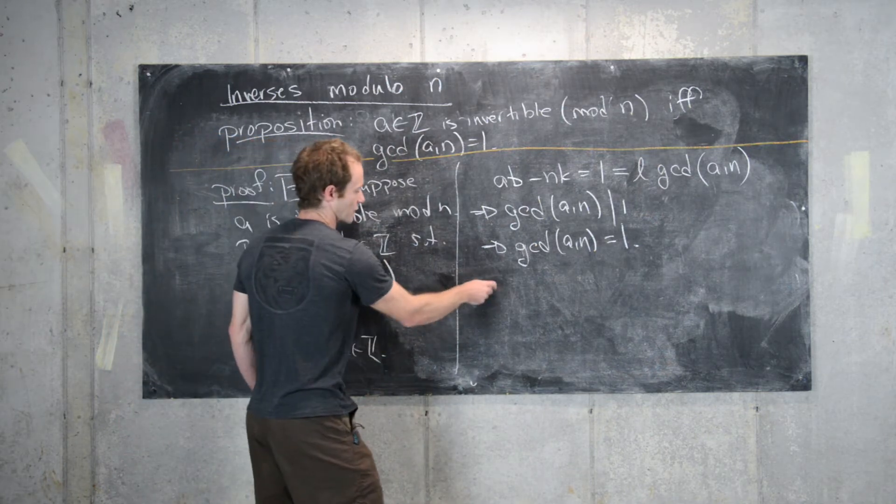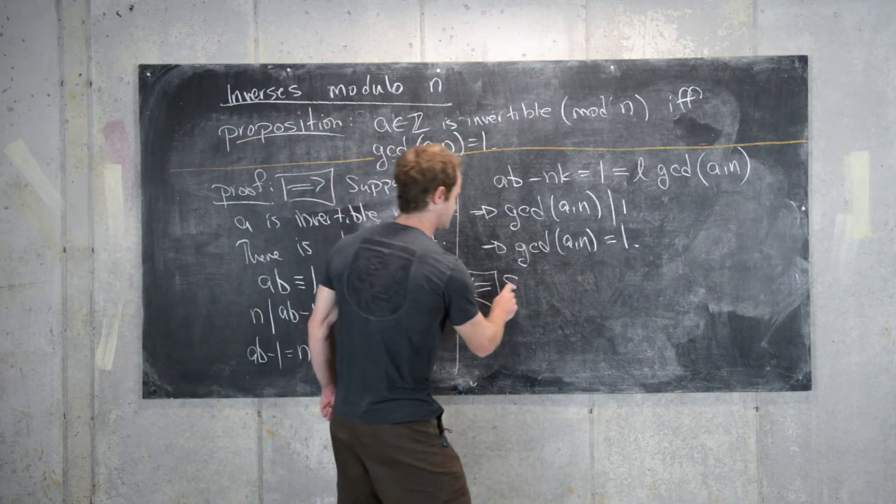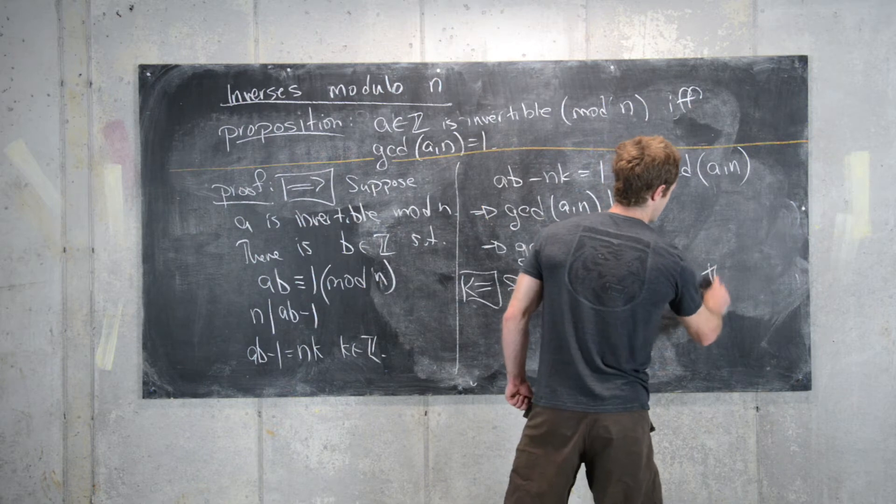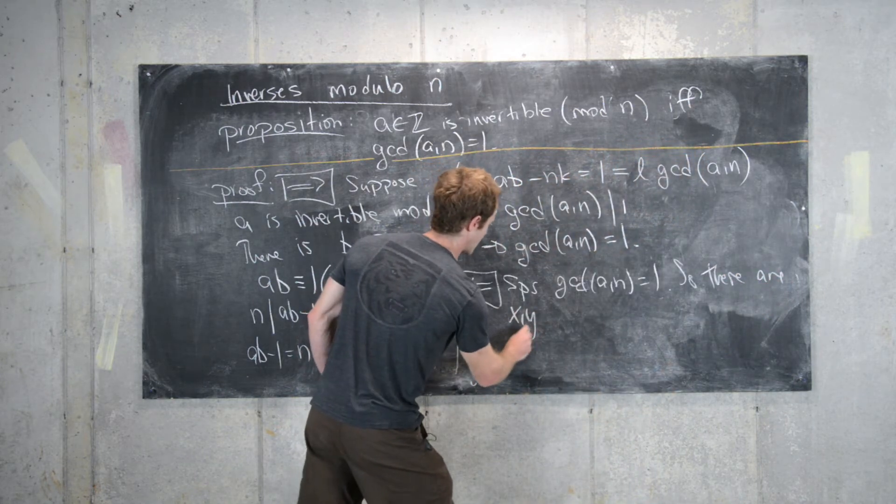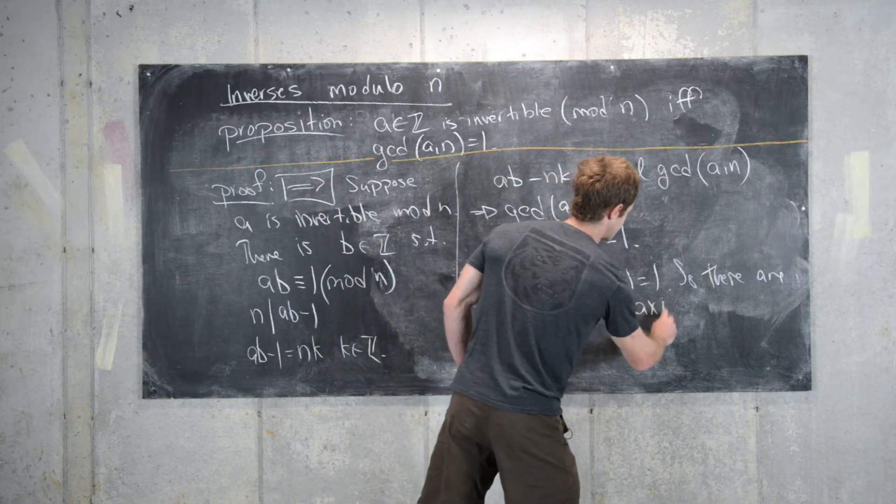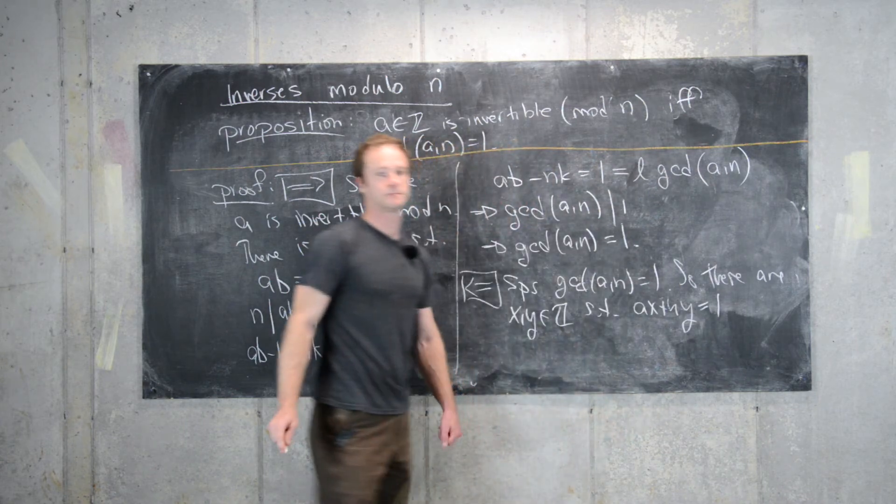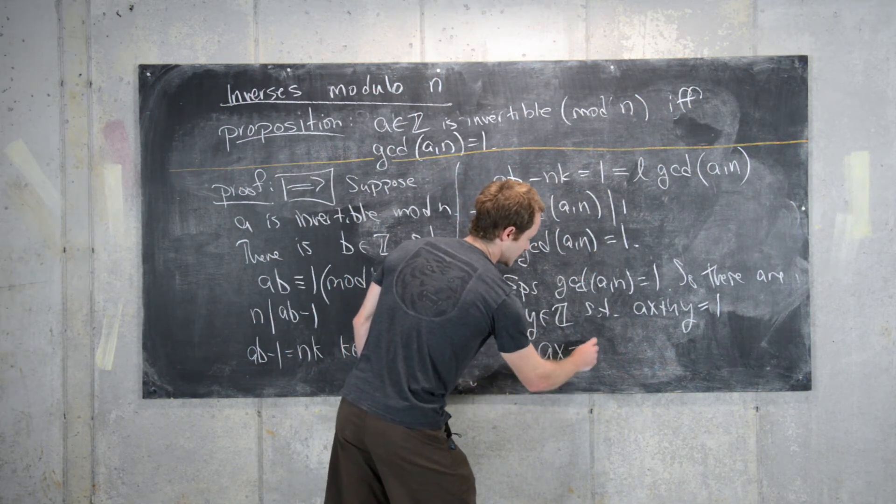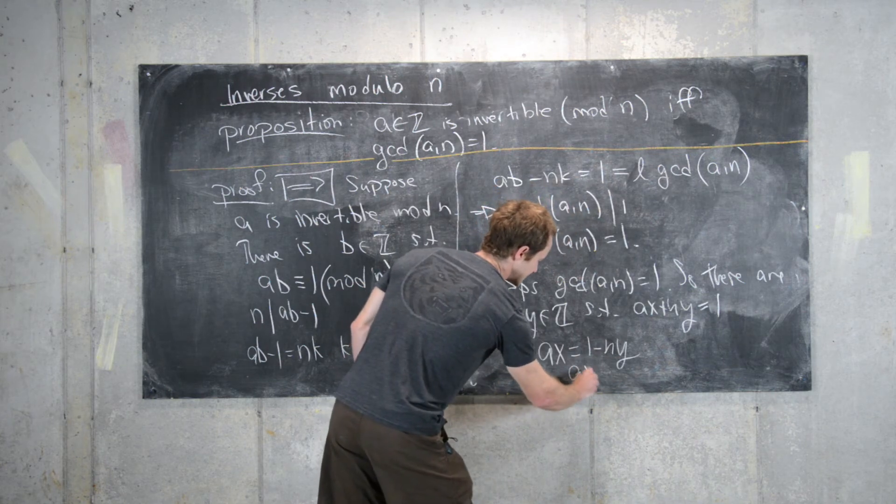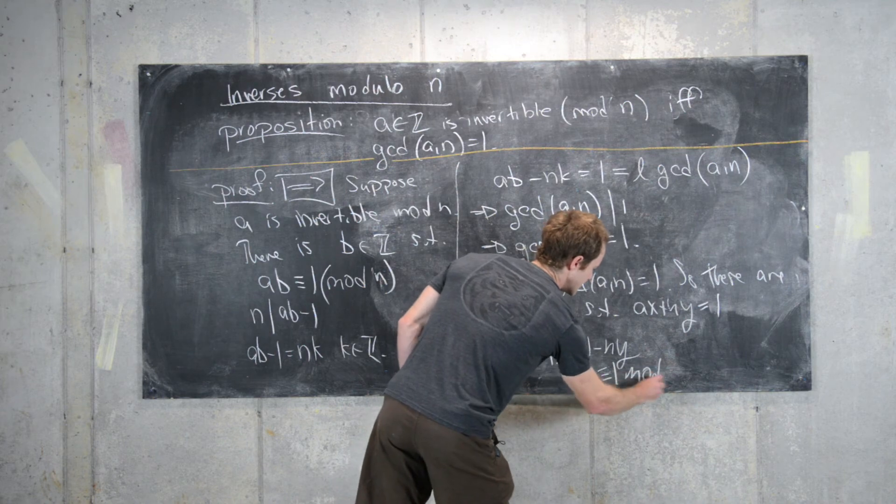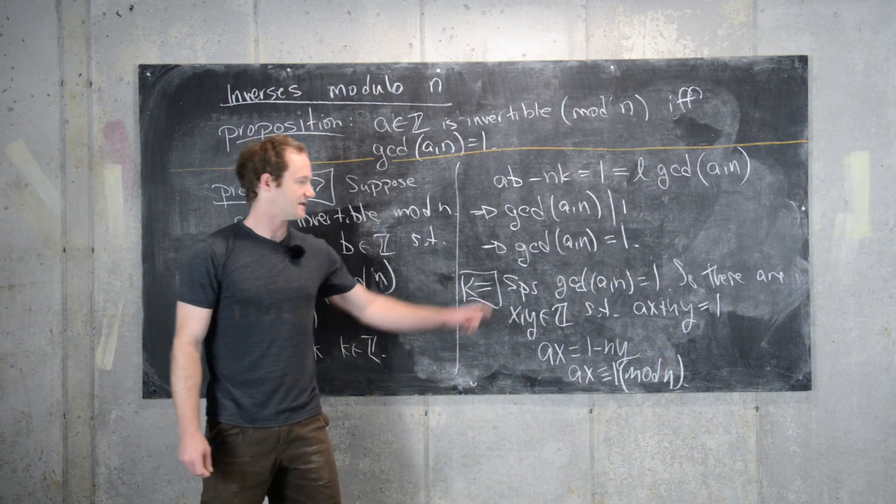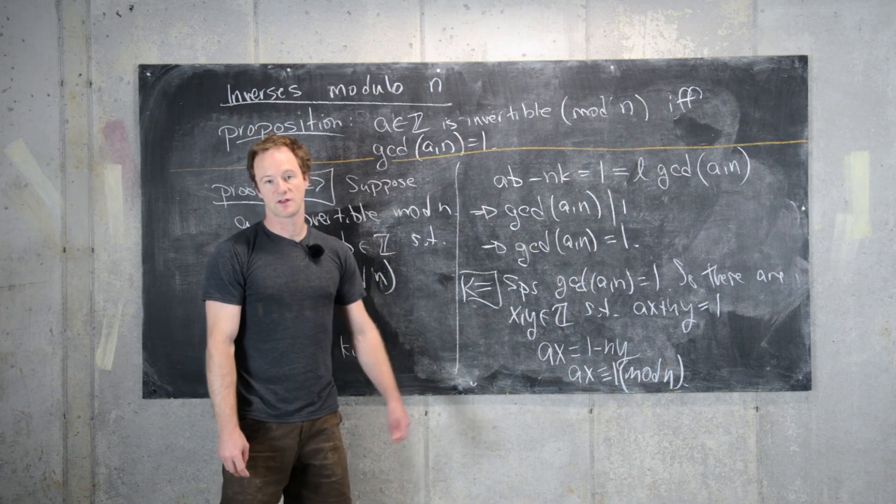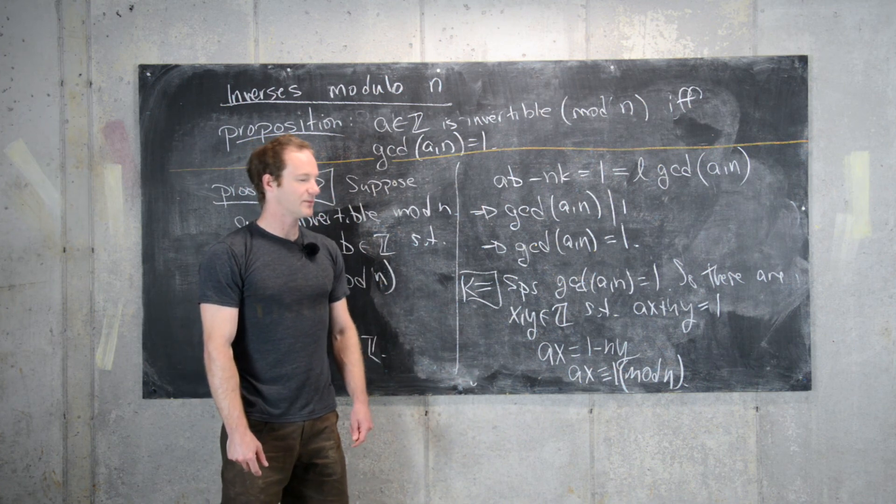So now let's go in the reverse direction. So let's suppose the GCD of A and n equals 1. So there are integers x and y such that AX plus ny equals 1. So we've proven that on the channel before, and now we can write AX equals 1 minus ny, which is the same thing as saying AX is congruent to 1 mod n. So this number x that we get from the extended Euclidean algorithm is, in fact, the inverse of A modulo n. So that'll be the end of this video. We'll do another one where we give an example of finding inverses mod n.